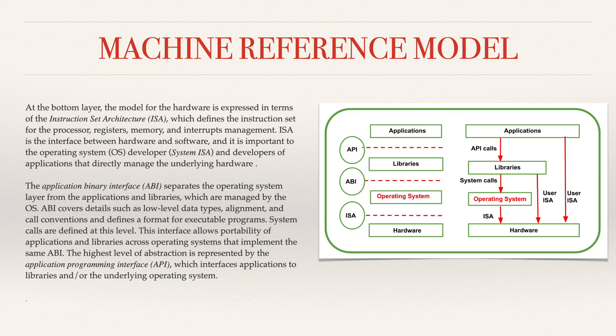The highest level of abstraction is represented by the API, which stands for Application Programming Interface, and it interfaces applications to libraries or the underlying operating system. As you can see in the diagram, all of these points are well described. Coming to the next slide, we have the continuation of the machine reference model.